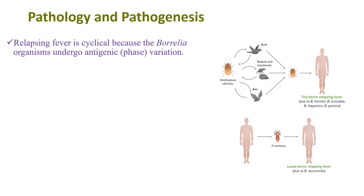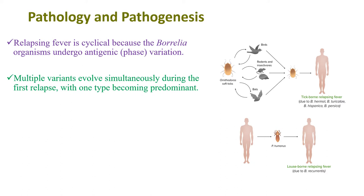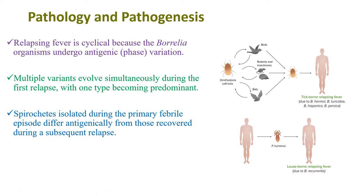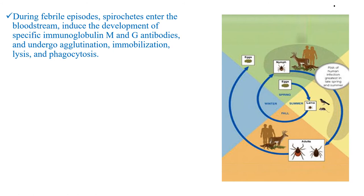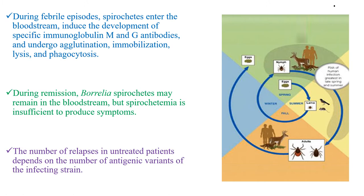Regarding pathology and pathogenesis, relapsing fever is cyclical because Borrelia organisms undergo antigenic phase variation. Multiple varieties evolve simultaneously during the first relapse, with one type becoming predominant. Spirochetes isolated during the primary febrile episode differ antigenically from those recovered during a subsequent relapse. During febrile episodes, spirochetes enter the bloodstream, induce development of specific IgM and IgG antibodies, and undergo agglutination, immobilization, lysis, and phagocytosis. During remission, Borrelia spirochetes might remain in the bloodstream, but spirochetemia is insufficient to produce symptoms. The number of relapses in untreated patients depends on the number of antigenic variants of the infecting strain.